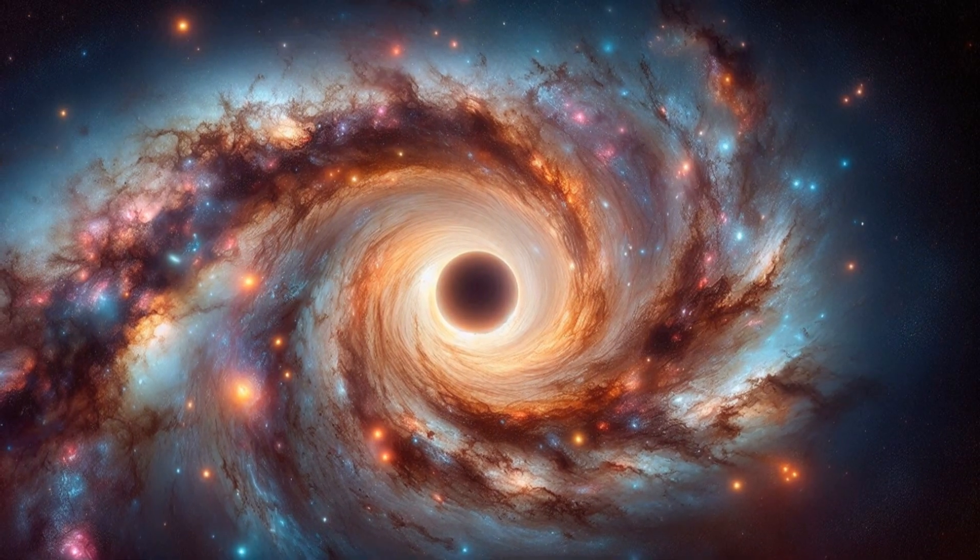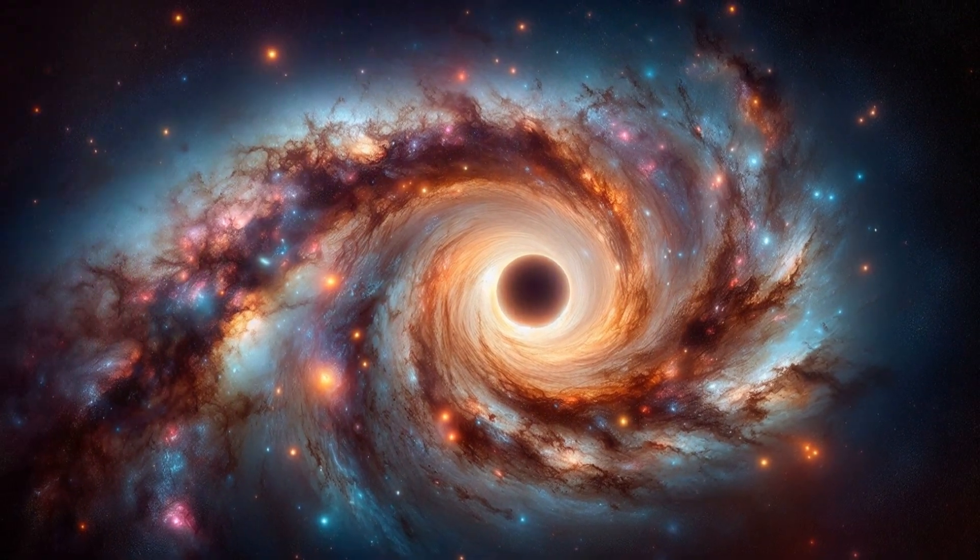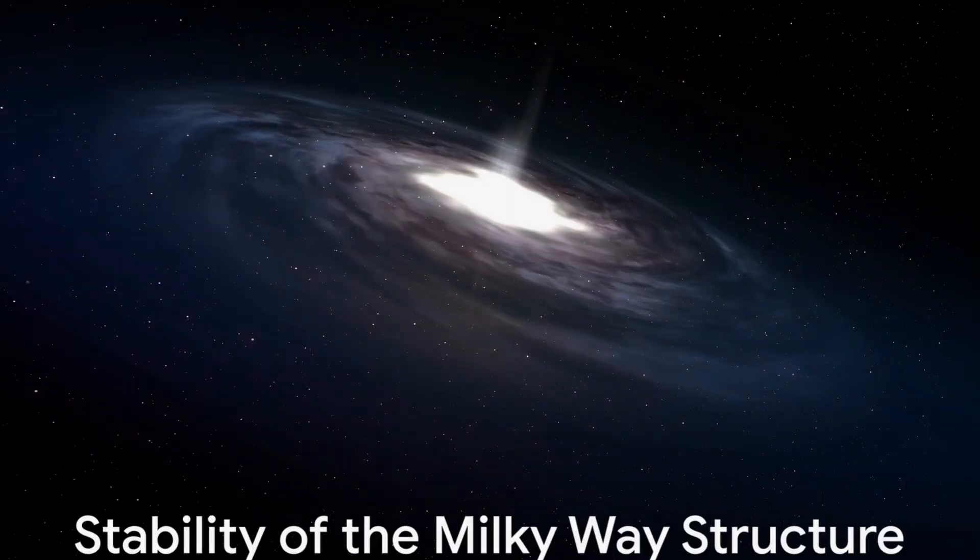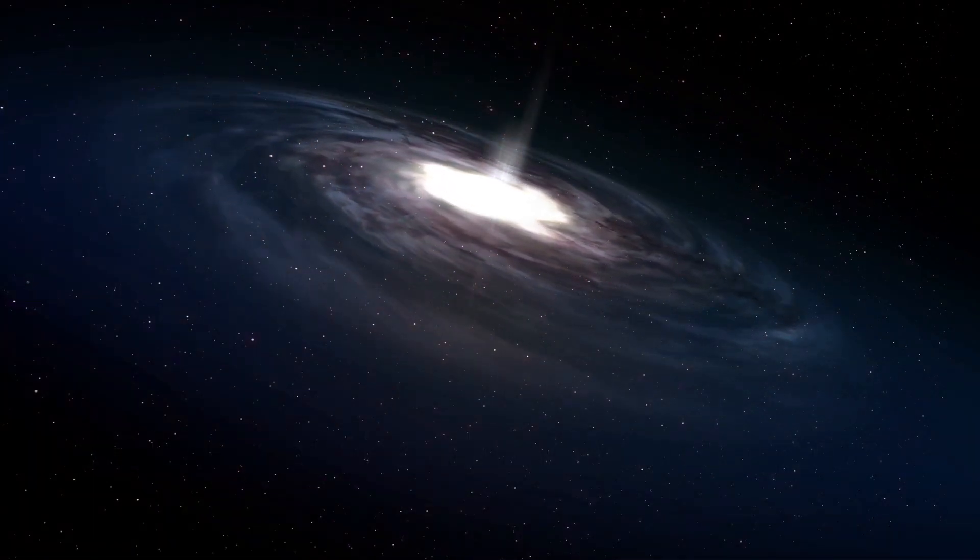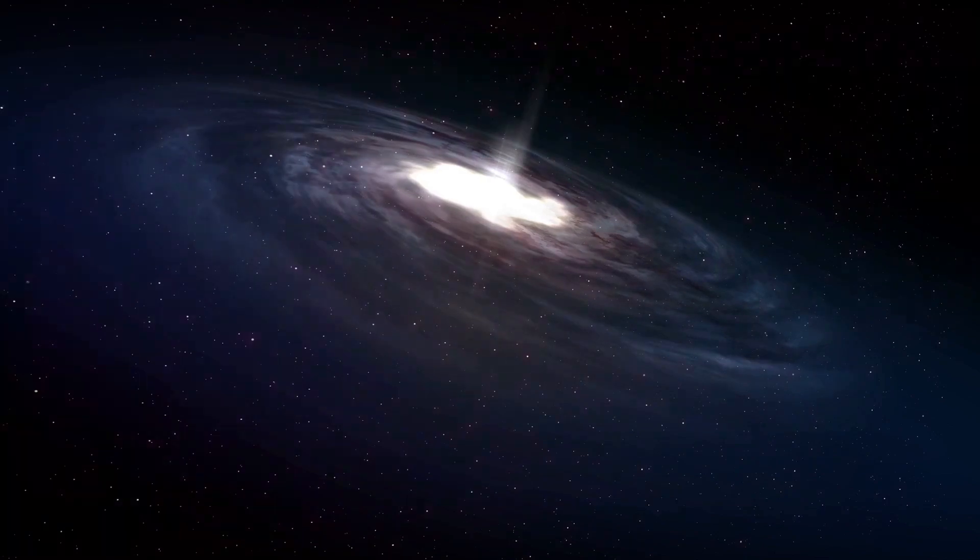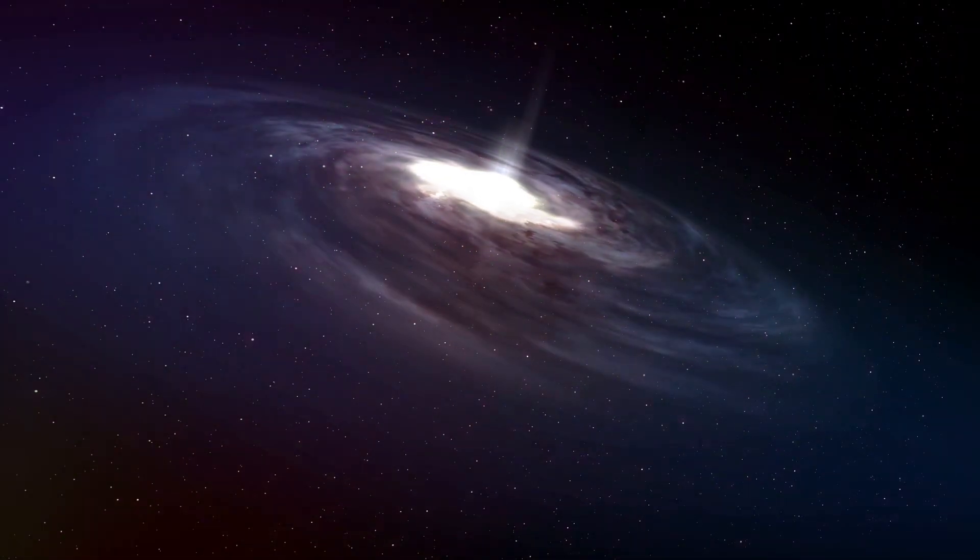Overall, the disappearance of Sagittarius A-star would send shockwaves through the galactic core, causing chaos among nearby stars and gas clouds. So, while the disappearance of Sagittarius A would create chaos in the immediate vicinity, it's important to understand how the overall structure of the Milky Way remains stable despite such a significant event.